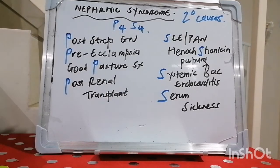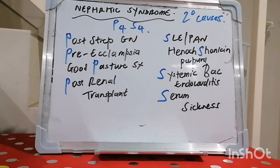Nephritic syndrome will manifest with hematuria and proteinuria, but not nephrotic-range proteinuria. The proteinuria you have is going to be less than three grams per 24 hours. You can also end up with hypertension and azotemia as a result.